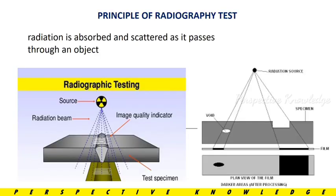The principle of radiography testing is that radiation is absorbed and scattered as it passes through an object. We use a radiation source directed at the object — the material absorbs the radiation — and we capture the result on a test film. By analyzing the image on the film, we can easily identify the material's properties and any defects.